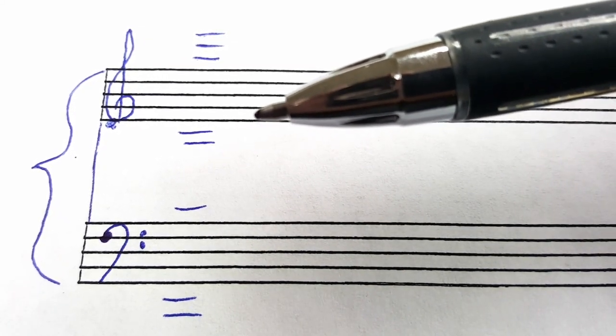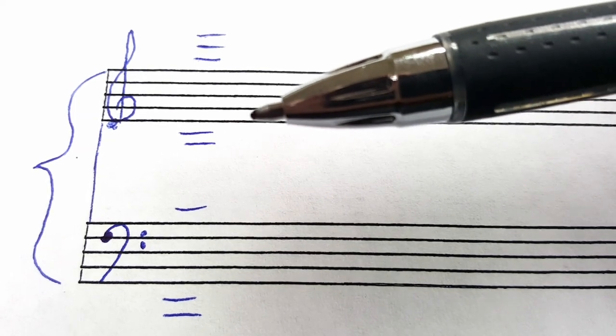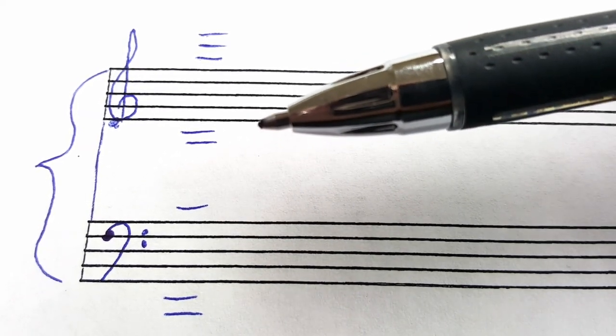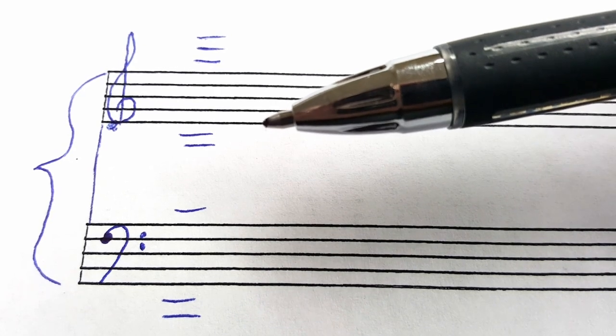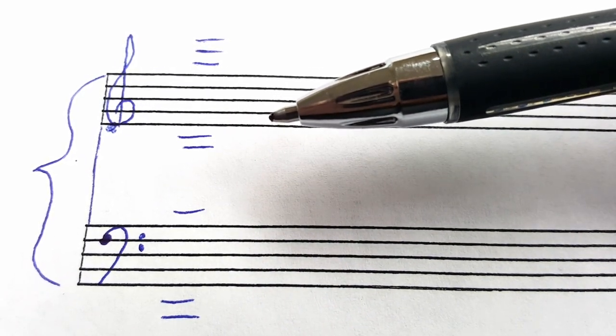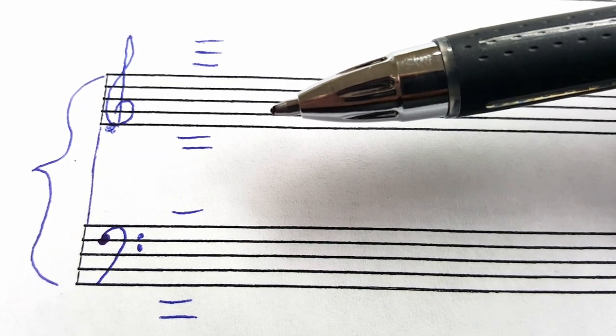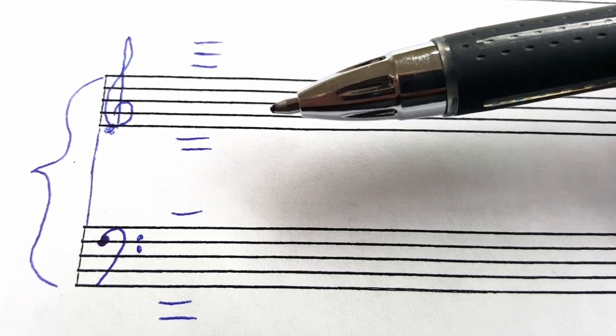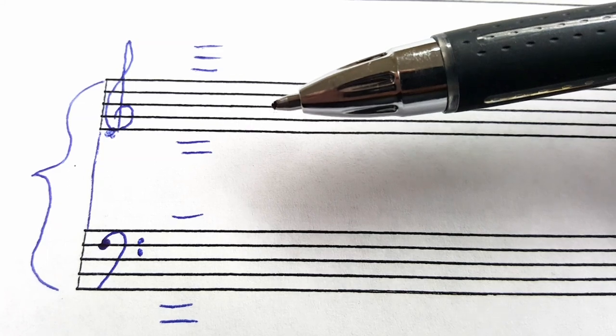So following that pattern of these seven notes and starting with the first line of treble clef, you have E, the space is F, the line is G, the space is A, the line is B, and so forth. It goes alphabetically up in this pattern.